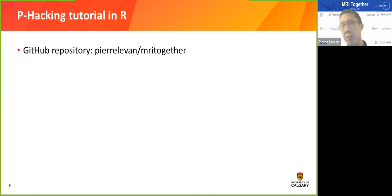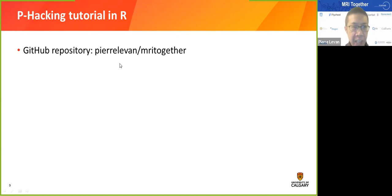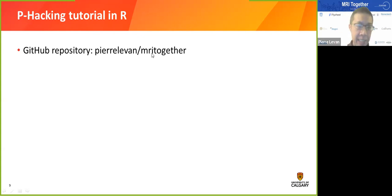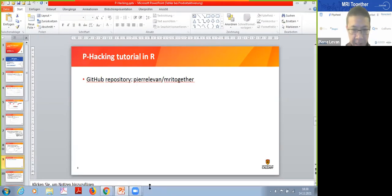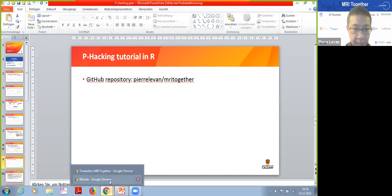If you want to p-hack, you want to find some false positives and convince people they're not false positives. To demonstrate this, we'll do a hands-on session in R. If you don't know R, don't worry — you can just follow along. All the code is available in this GitHub repository, so you can either play with the code or run it as-is. Let's exit the presentation and go in there.